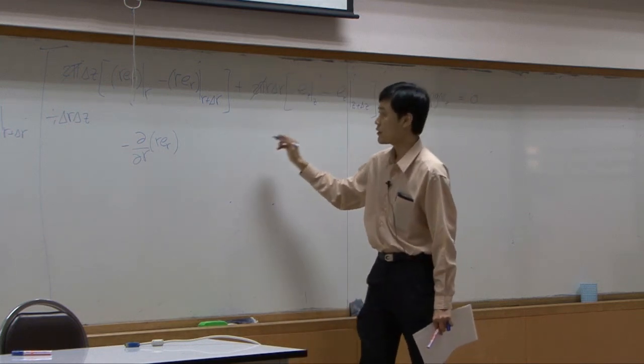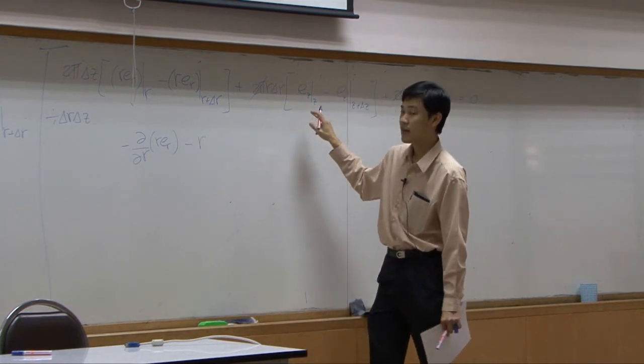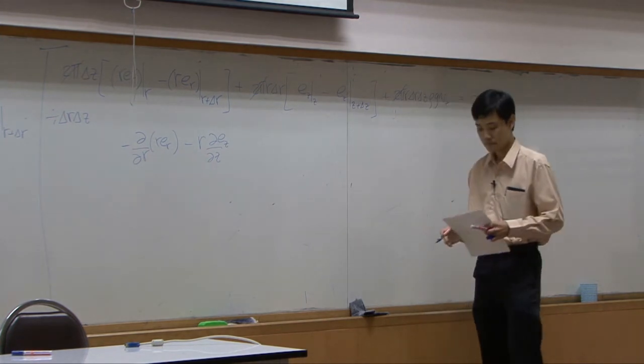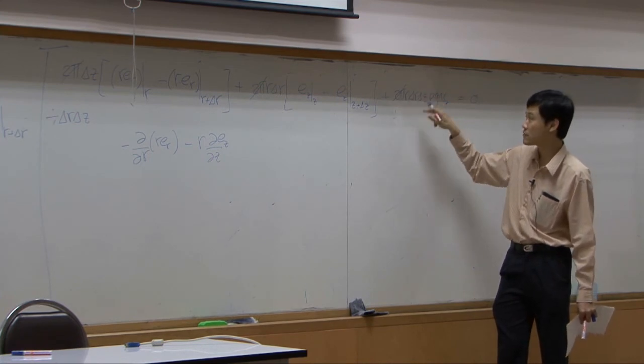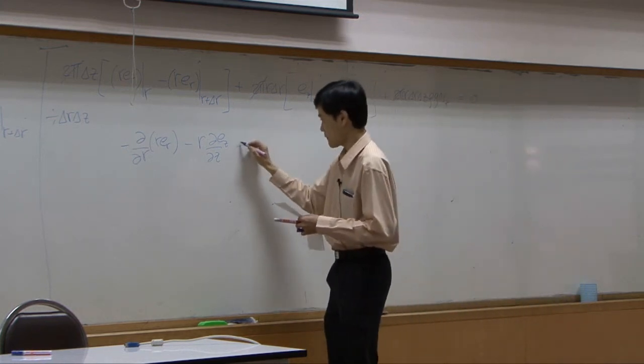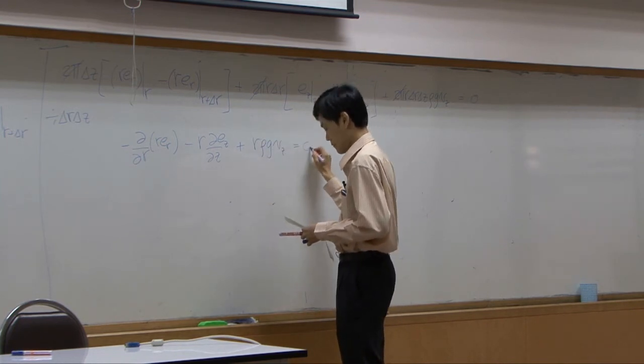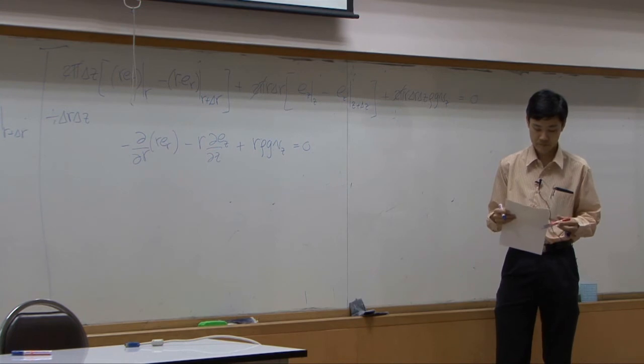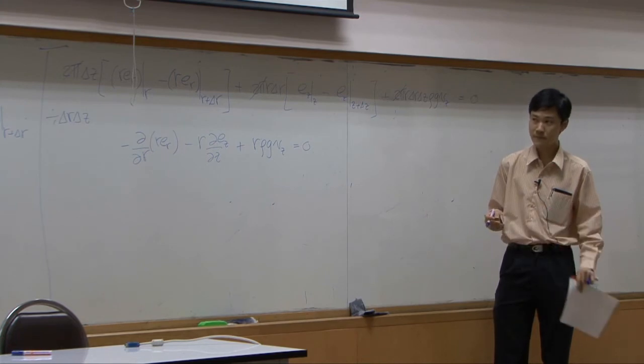Second term, you still have r here, so r remains. The rest here, after taking a limit, it would be differential of ez by dz. Last term, delta r delta z will be cancelled out. You have r rho g vz.